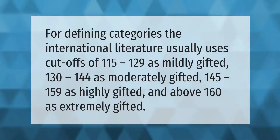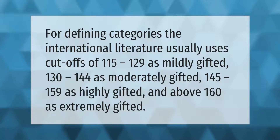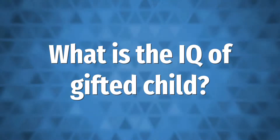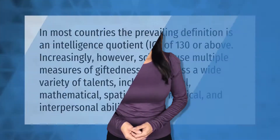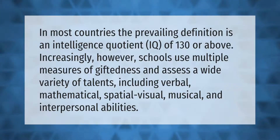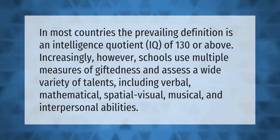For defining categories, the international literature usually uses cutoffs of 115 to 129 as mildly gifted, 130 to 144 as moderately gifted, 145 to 159 as highly gifted, and above 160 as extremely gifted. In most countries, the prevailing definition is an IQ of 130 or above. Increasingly, however, schools use multiple measures of giftedness and assess a wide variety of talents, including verbal, mathematical, spatial, visual, musical, and interpersonal abilities.